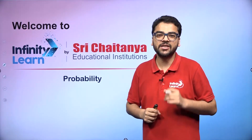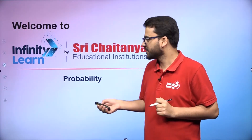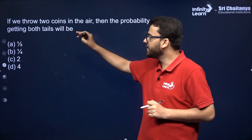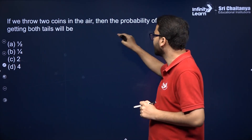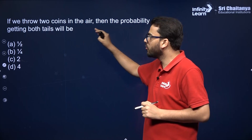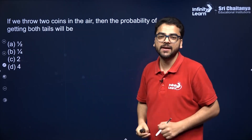Let's start with the MCQs in the chapter probability. The question is: if we throw two coins in the air, then the probability of getting both tails will be what?